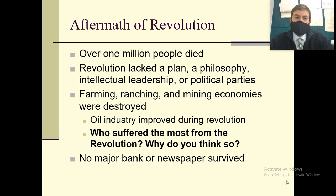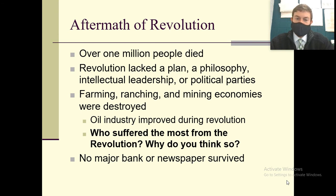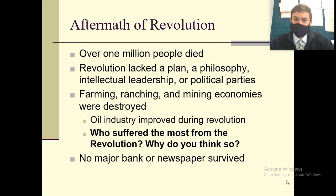In the aftermath of the revolution, over a million people died. The revolution had no real plan and the organization wasn't there, so you ended up with a lot of drawn-out backstabbing without one unified goal. Farming, ranching, and mining were pretty much destroyed because they were owned by the government or very large private owners. The oil industry actually improved during this period because of the industrial revolution and industrial growth.